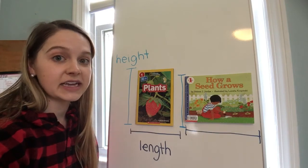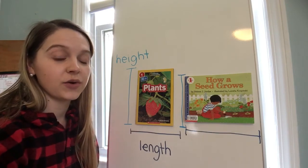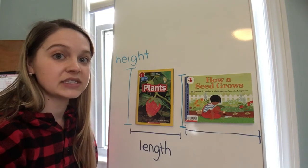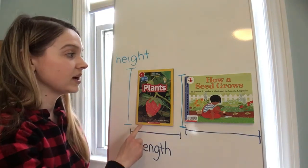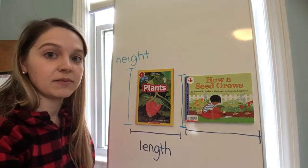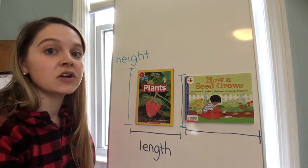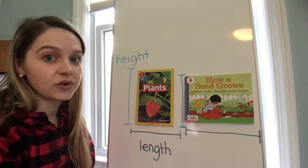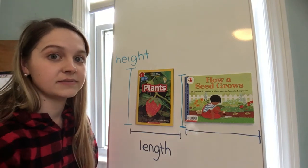For today's activity you're going to be looking at a picture of a few objects and you're going to be using those describing words: taller, shorter, and longer.